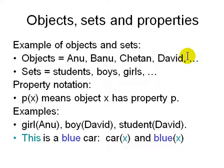And sets would be students, boys, girls. We have properties, so property p(x) means that object x has property p. For example, Anu is a girl - you write girl(Anu). And boy, the argument is David. The student argument is David.